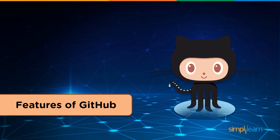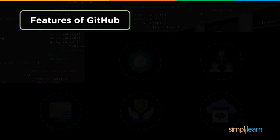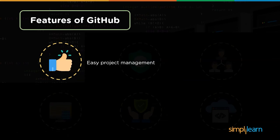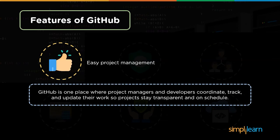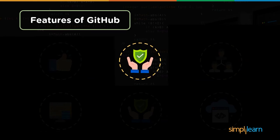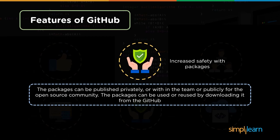Let's now have a look at the features of GitHub. The first feature is easy project management — GitHub helps project managers and developers to coordinate better on the project; work can be easily tracked and updated to make sure the project is on schedule. The second feature is increased safety with packages. The packages on GitHub can be published as desired — privately, within a community, or publicly.